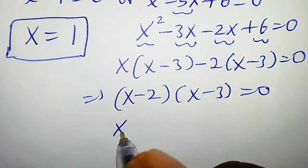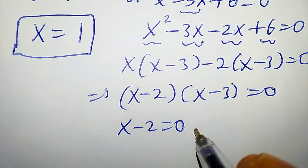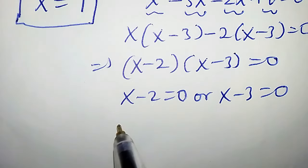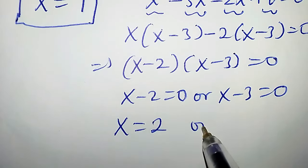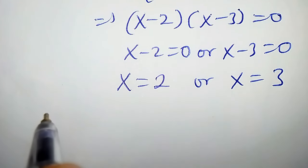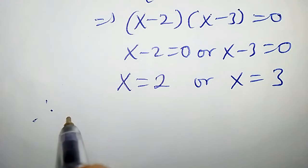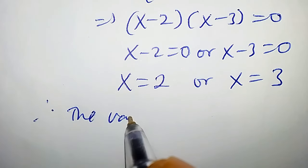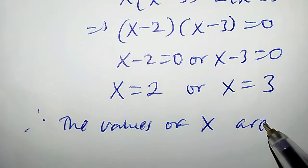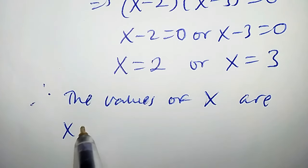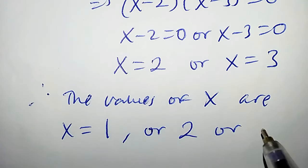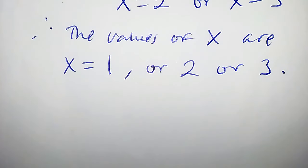So x - 2 = 0 or x - 3 = 0, giving x = 2 or x = 3. Therefore the values of x are x = 1, or x = 2, or x = 3.